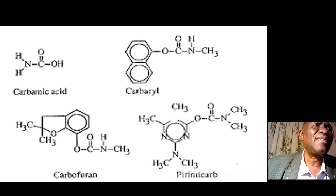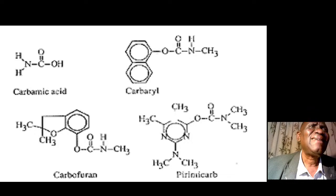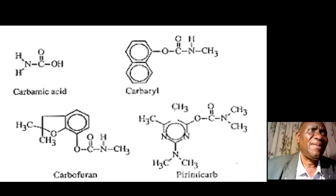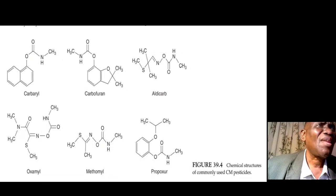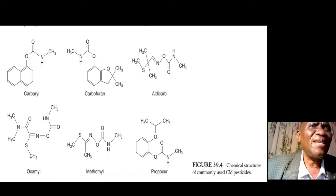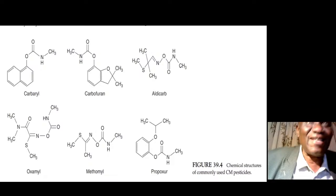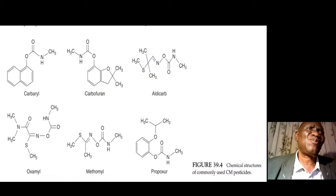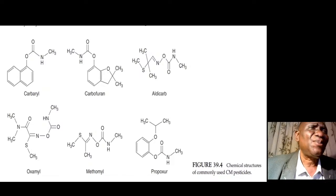Examples of carbamates include carbaryl, pirimicarb, carbofuran, and several others: oxamyl, methomyl, and propoxur. Some may act as nematicides. These all originate from carbamic acid.